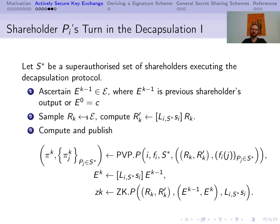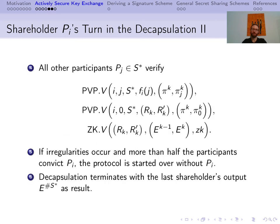In combination, this proves that R_k' and R_k, and e_{k-1} and e_k are connected by the same element and that the connecting element coincides with the one shared by the dealer. As a fourth step, all other participants verify the proofs that Pi has published. If Pi misbehaved, the protocol is restarted and Pi is excluded from future runs. The last shareholder eventually outputs E as the result of the decapsulation.